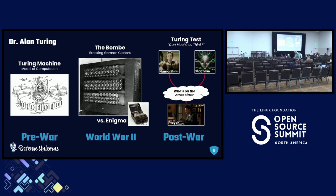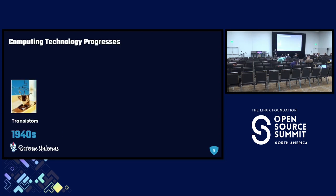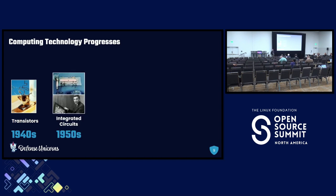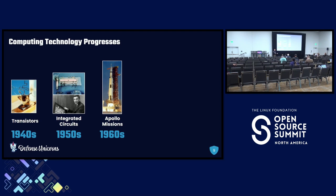Alan Turing was very theoretical. The machinery available in the 1940s was not going to be able to produce an AI like what he was envisioning, so some technological advancements were needed. Fortunately, in the late 40s we had the invention of the transistor, replacing vacuum tubes and electromechanical relays used in those large computers. Throughout the 50s, researchers started developing integrated circuits. Thanks to NASA — the Apollo program in the 1960s really accelerated integrated circuit development because they needed that technology for the guidance computers on the Apollo mission. By the 70s we started seeing commercial microprocessors, and then in the 80s we had personal computers.